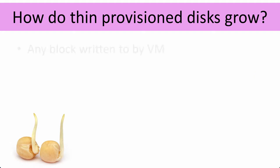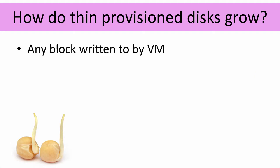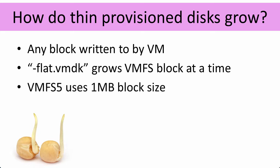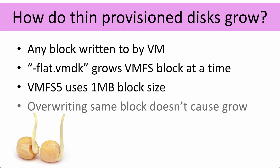So how do thin provisioned VMDK files grow? Essentially, any block that the virtual machine writes to has to be stored inside the VMDK file. As the VM writes more and more data, the VMDK will get larger. The metadata file stays tiny, but the flat file will grow in VMFS blocks, one block at a time as data arrives. Since VMFS5 uses one megabyte block size, the flat file will grow one megabyte at a time, containing all disk blocks written to by the virtual machine.